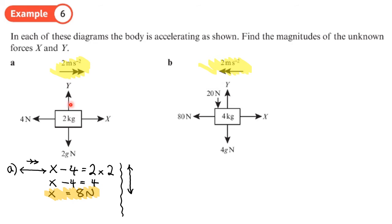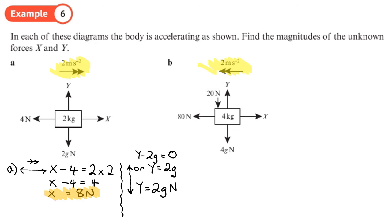Now let's find Y by looking at the vertical forces. It's not accelerating vertically, so those forces are balanced. Y is equal to 2g — there is no resultant force. You could write Y minus 2g equals 0, or simply Y equals 2g. You can leave your answer in terms of g, or work out 2 times 9.8 to get 19.6 Newtons.